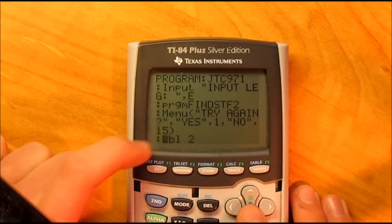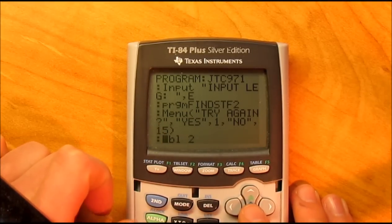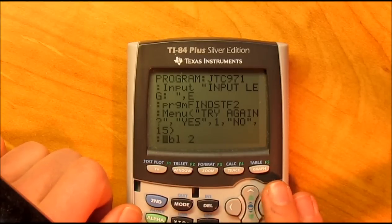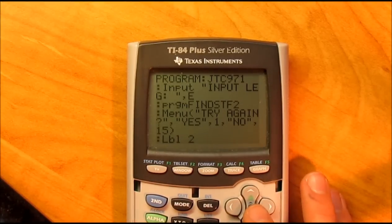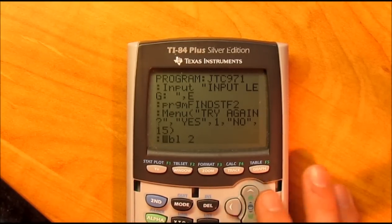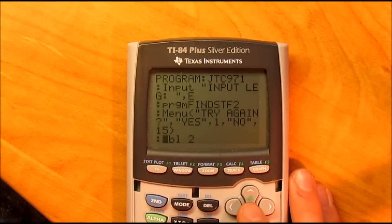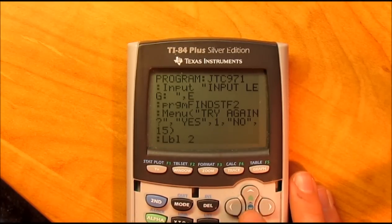To get to that, you would hit program and scroll all the way over to the right and your list of programs will be there. You just hit enter to find STF 2. If you have any other questions like where buttons are, whatever, leave a comment and I'll be happy to help you out with that.